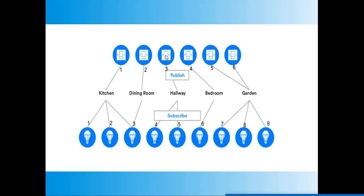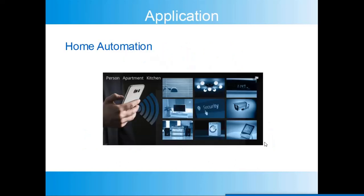Switch three publishes messages to the hallway address, to which nodes four and five are subscribed. Switch four publishes to the bedroom address, to which node six is subscribed. Switches five and six publish messages to the garden address, to which nodes seven, eight, and nine are subscribed.